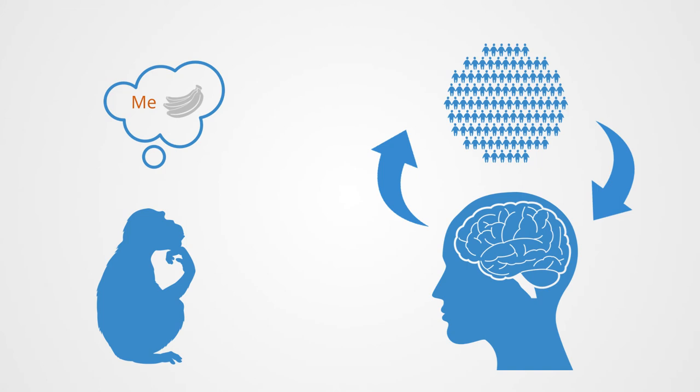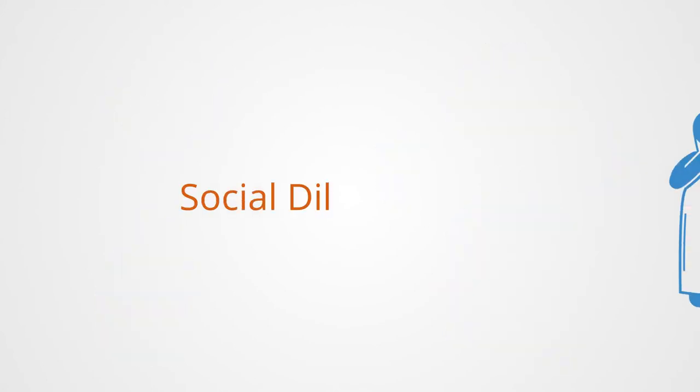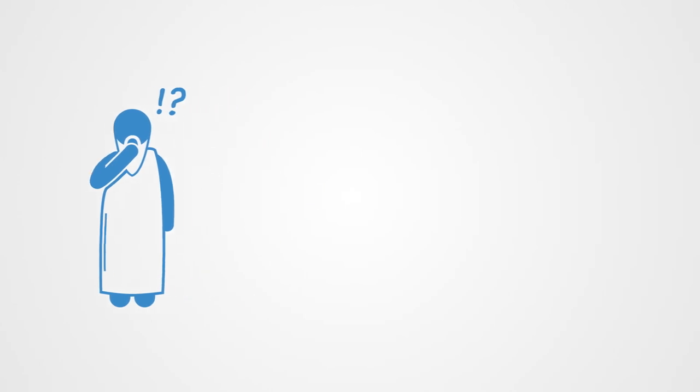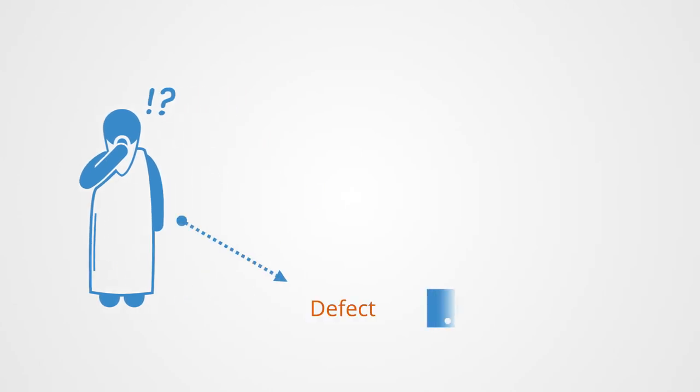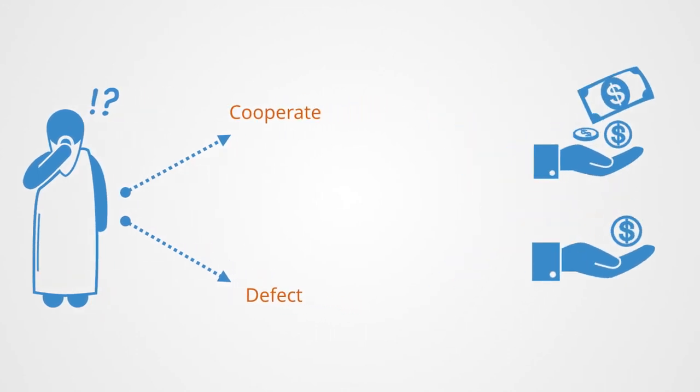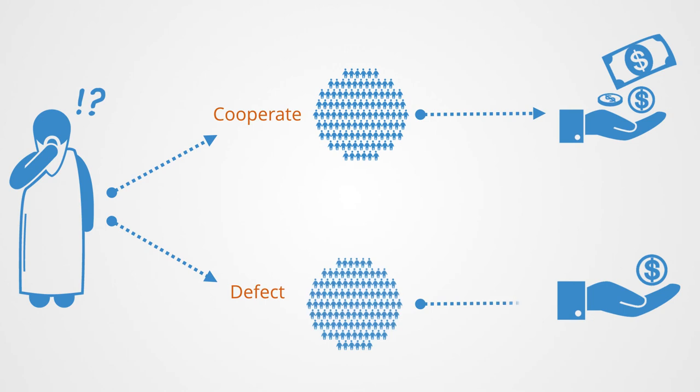This central dynamic within cooperation is captured in what we call the social dilemma. Social dilemmas are characterized by two properties: the social payoff to each individual for defective behavior is higher than the payoff for cooperative behavior, regardless of what other members in the group do. Yet all individuals in the society receive a lower payoff if all defect than if all cooperate.